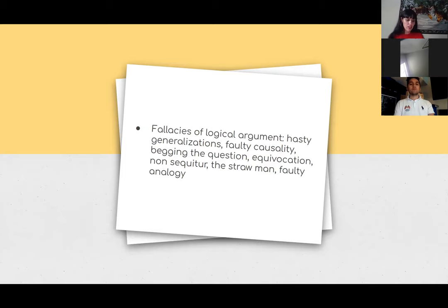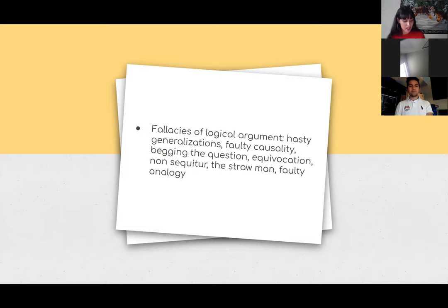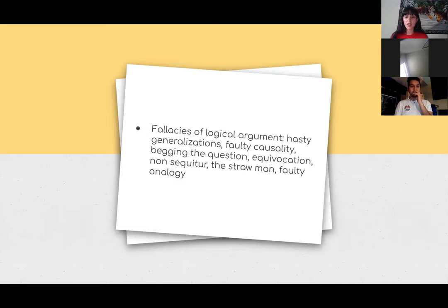Fallacies of logical argument start out with hasty generalizations — an inference drawn from insufficient evidence. Like: 'Because my Honda broke down, all Hondas must be junk.' This is something people use a lot with race. I keep hearing this with people who are against the Black Lives Matter movement — a lot of people will say, 'Well, if they didn't make the cops mad, then they wouldn't be killing them.'